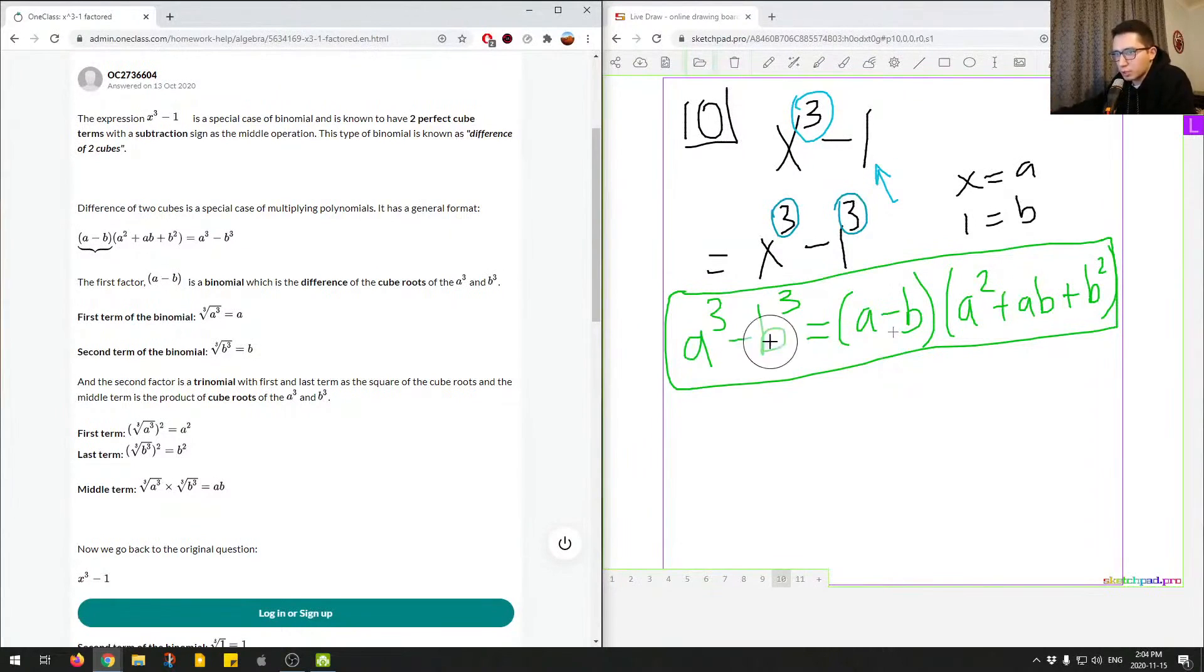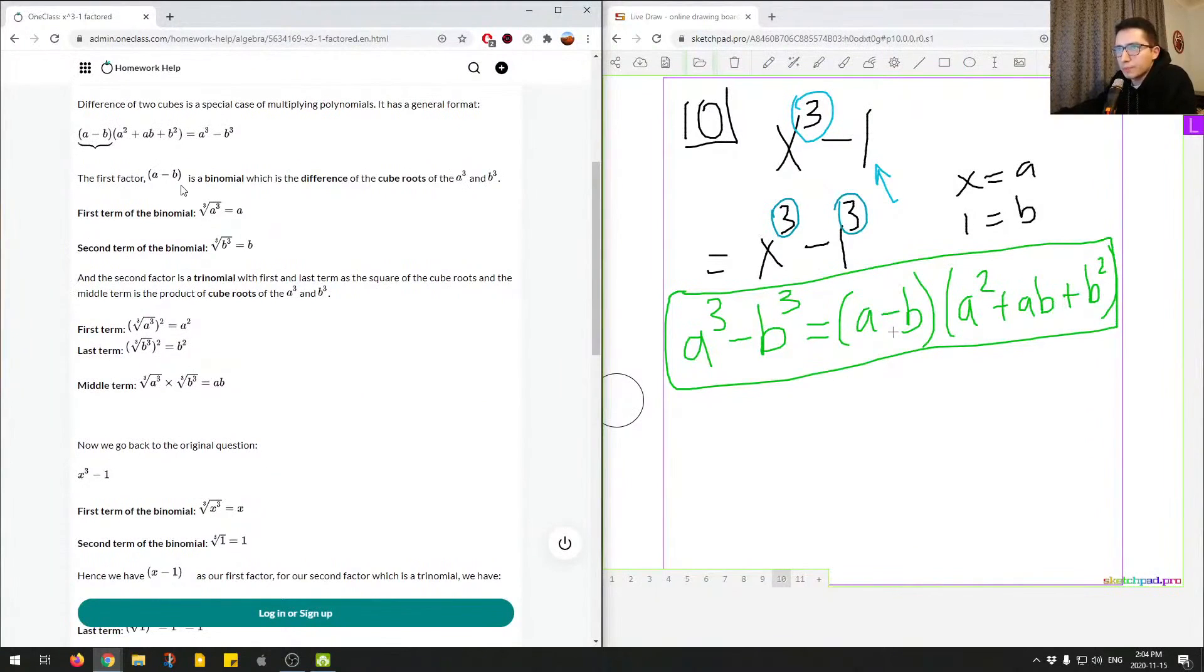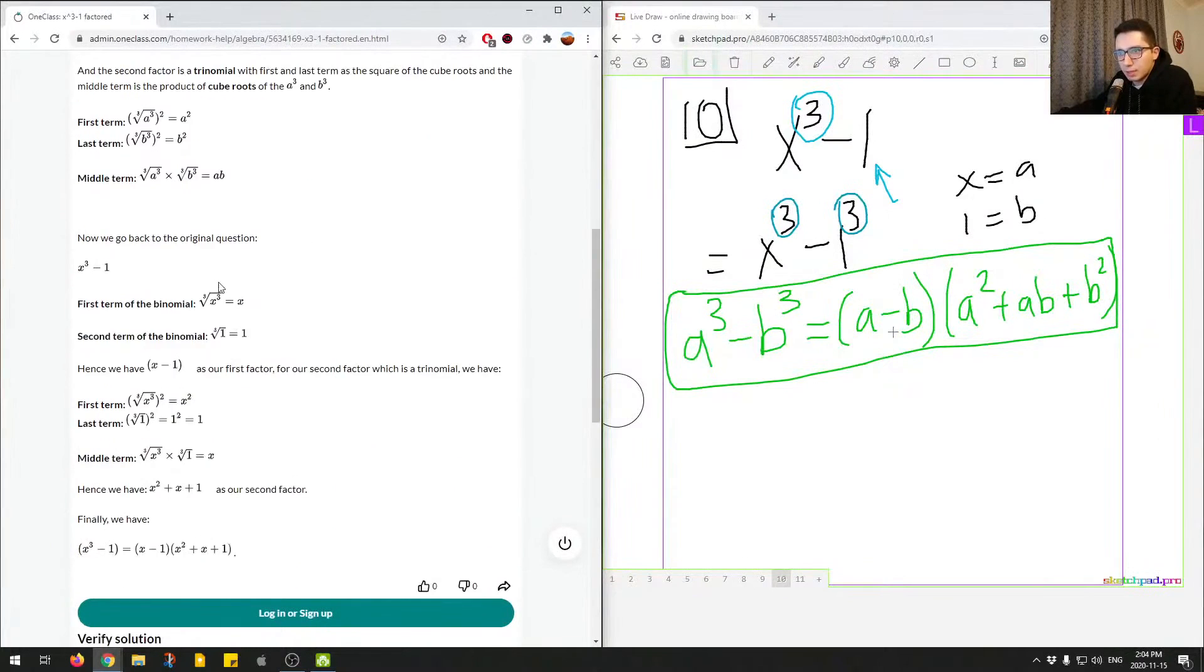We've kind of already set up this question to understand how we can factor this out. We really all we have to do is plug in these values into this template equation. So, going on with the junior tutor's answer, the first factor is a binomial, which is the difference of the cube roots. So, they explain why the a cubed and b cubed are cubed. If you take the cubed root, we end up with a and b. And the second factor is a trinomial, with the first and last term as a square. And then, they apply it to our expression here, x cubed and 1 cubed. And they plug in the values into the template equation.